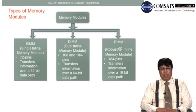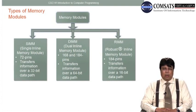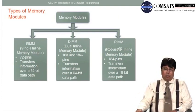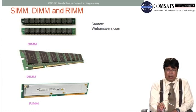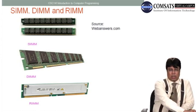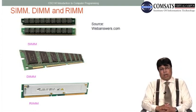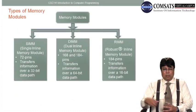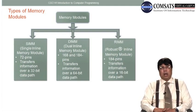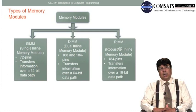DIM stands for Dual Inline Memory Module. The number of pins is 168 to 184, and it transfers data on a wider data path — a 64-bit data path. A DIM has pins on both sides, which provide the path for data transfer. It has double the width of the data path of the SIM, therefore it is faster than the SIM.